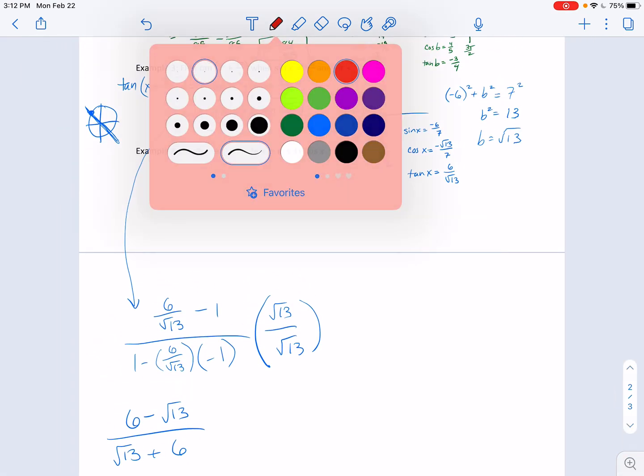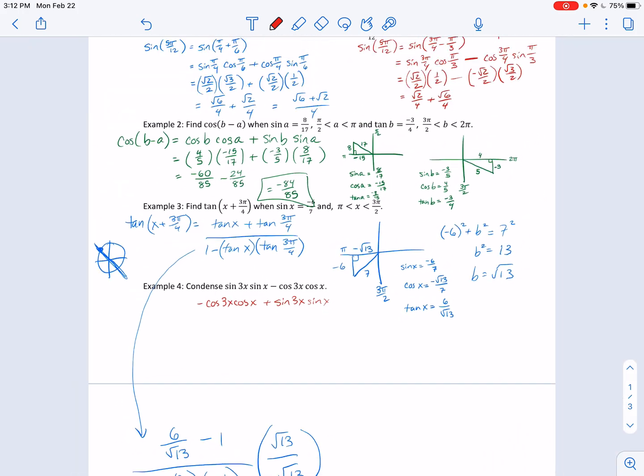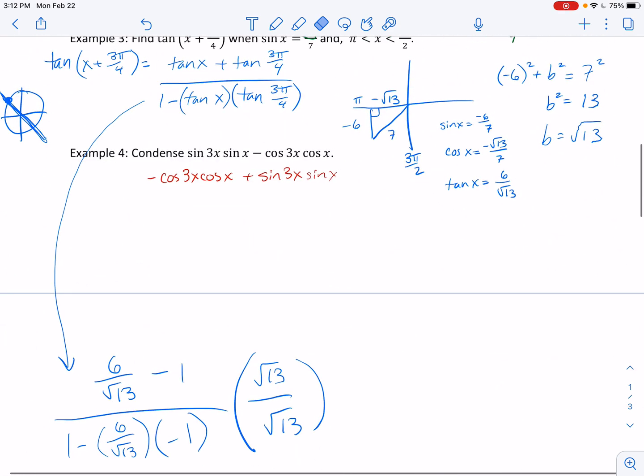Last example, here we go. On this one, they're saying condense this. I see sine, sine, cosine, cosine, but the minus is here. Notice that this is a negative cosine. I can reorder this. And then, well, that's almost one of my formulas. Okay, notice that looks a whole lot like this one right here. So, what I can do is I can factor out the negative.